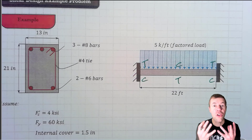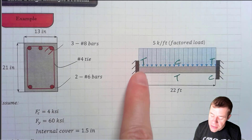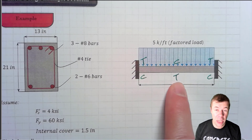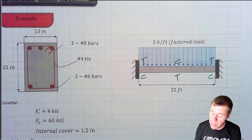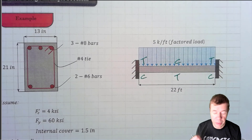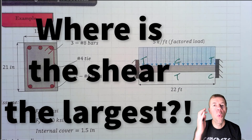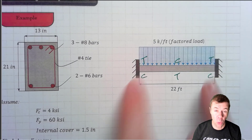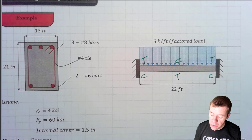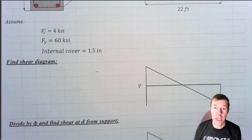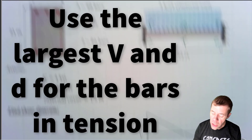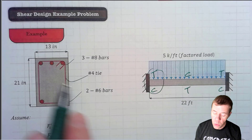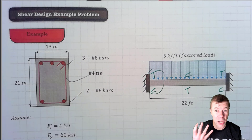Pay attention — I'll show you through the maze. If my tension is at the sides, I would use the top bars. My tension in the middle means I would use the distance to the center of my bottom bars. And at the sides again, it would be top bars. I have to think about where my shear is the largest — almost always at the supports. So we need to use the shear and the D here. That means we're going to be using the D to the top steel.